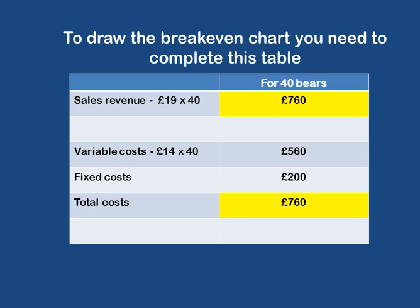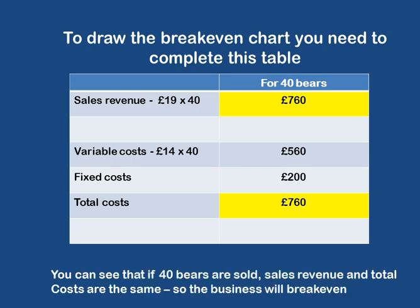We know the breakeven point is 40 bears. So if he sells 40 bears, he'll make £760 in sales revenue, since each one sells for £19. Variable costs are £560 — that's £14 times 40. Fixed costs are given to you in the question, and total costs — if you add variable costs and fixed costs together — also give you £760. The sales revenue and total cost boxes are exactly the same number, which tells us that at 40 bears his revenue would totally cover his costs with nothing left over — hence the meaning of breakeven.